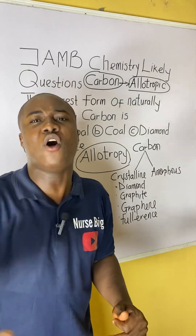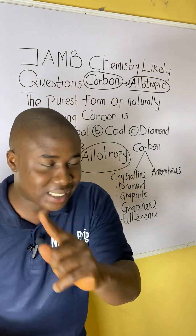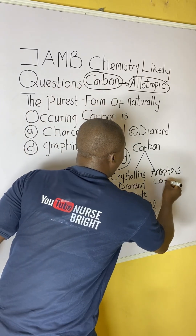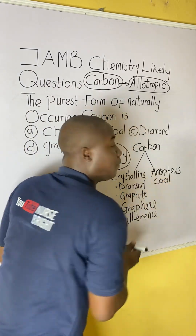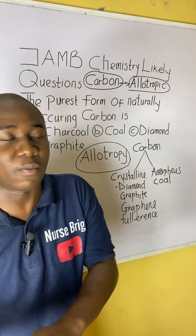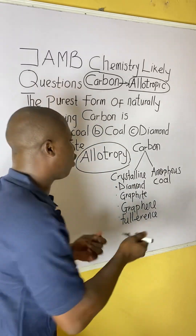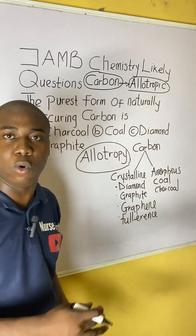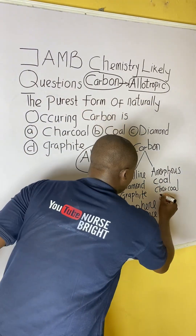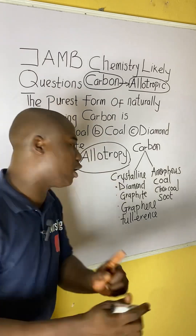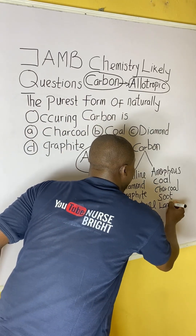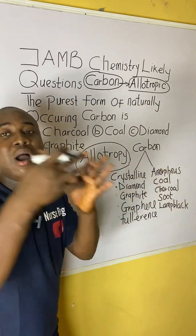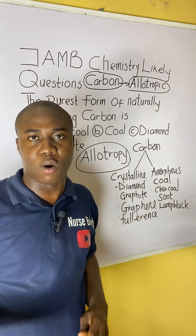What are the amorphous allotropes of carbon? The amorphous allotropes of carbon include what we call coal — coal is amorphous — charcoal, soot, and lamp black. So, these are the major amorphous allotropic forms of carbon.